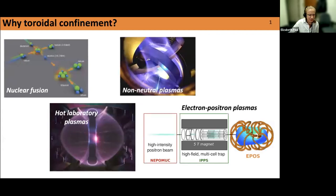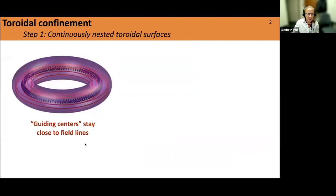We're broadly interested in toroidal confinement for nuclear fusion applications — we want to confine a hot plasma for sufficiently long periods of time to get net energy gain through nuclear fusion. There are other applications too, such as astrophysical plasmas composed of non-neutral plasmas like electron-positron plasmas. The basic ingredients you need for toroidal confinement is to get field lines which lie on continuously nested toroidal surfaces, because the guiding center motion largely follows the magnetic field lines on average.